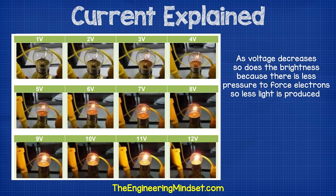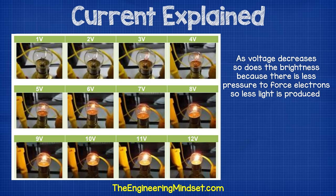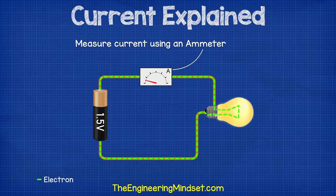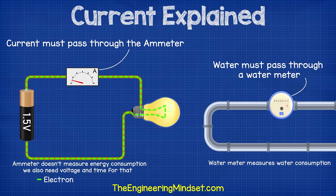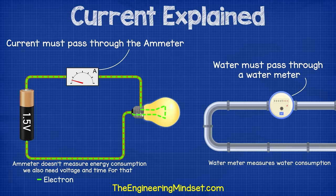If we reduce the voltage, then fewer electrons will move and the lamp will become dimmer. If we increase the voltage, then more electrons will flow and eventually the lamp will not be able to cope, so it will burst or burn out. So to measure the current in a circuit, we need to connect an ammeter in series so that the current flows through it. Think of it like a water meter — the water needs to flow through the water meter for us to know how much water is flowing in the pipe. Likewise, we need the electrons to flow through our ammeter so that we know how much electricity is flowing in our circuit.